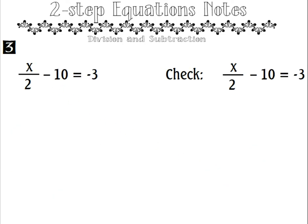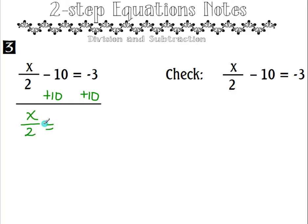Looking at example 3: x divided by 2 minus 10 equals negative 3. To undo the subtraction of 10 we add 10 to both sides. On the left side we have x divided by 2, and negative 3 plus 10 is positive 7. To undo this division of 2, we multiply by 2 on both sides, so x equals 14.